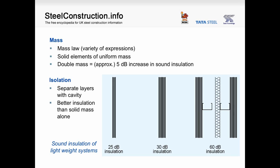Looking at the diagram on the slide, one layer of plasterboard might provide 5 dB of sound insulation. Doubling to two layers gives around 3 dB more. Four layers of plasterboard close together would probably only give about 35 dB. However, if we apply the principle of isolation and use separate layers in our construction, we can achieve vastly improved sound insulation. Two layers of plasterboard separated by a cavity with insulation, then another two layers of plasterboard, can give 60 dB of sound insulation. Mass alone is not the solution — it is much more effective combined with isolation.